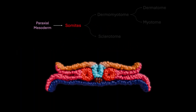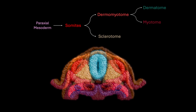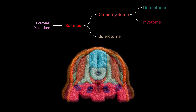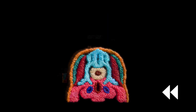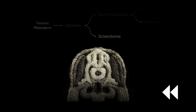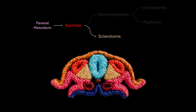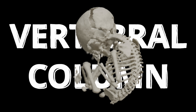There were about 44 pairs in total, and by the end of week three, each somite was already splitting into three parts: the dermatome, myotome, and sclerotome. Today we're focusing on the sclerotome, because from these clusters of cells comes one of the most important structures in the body — the vertebral column.